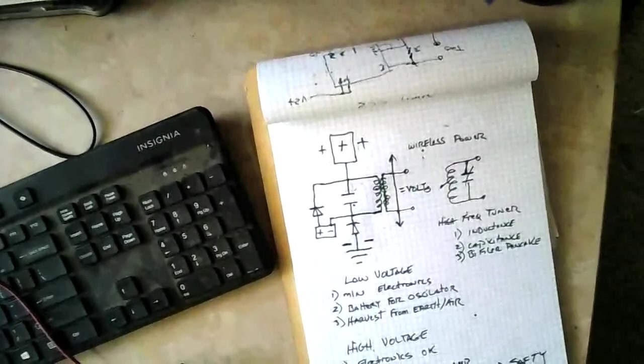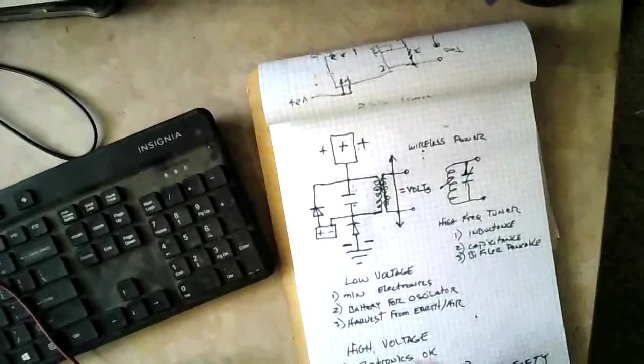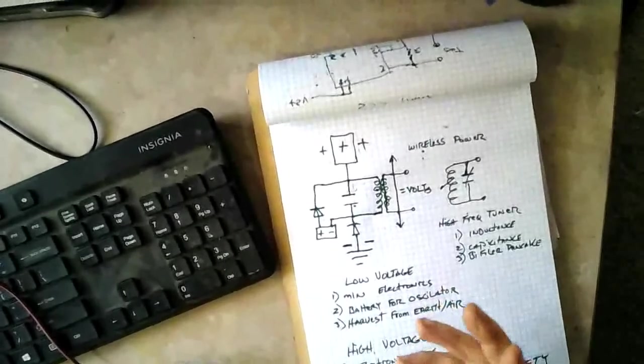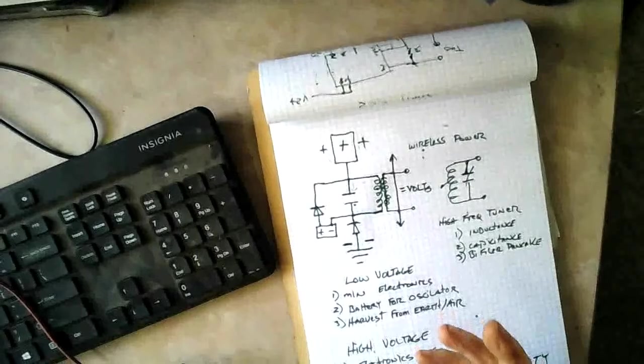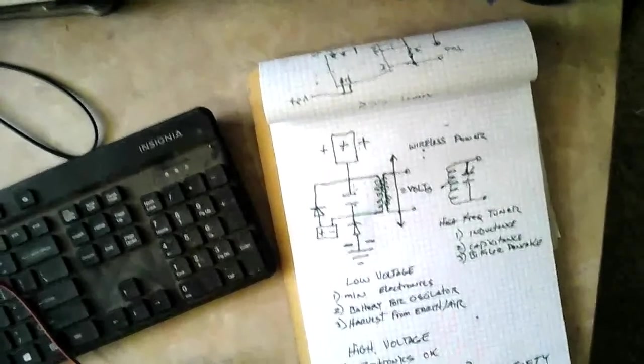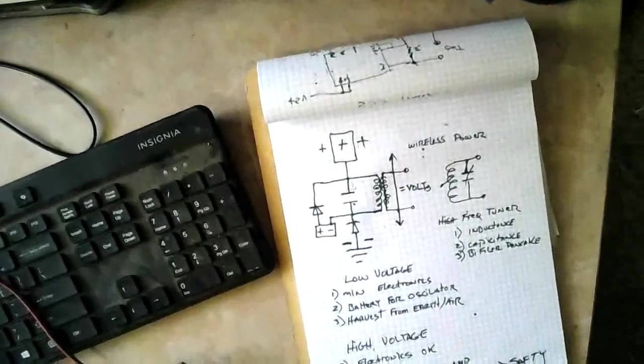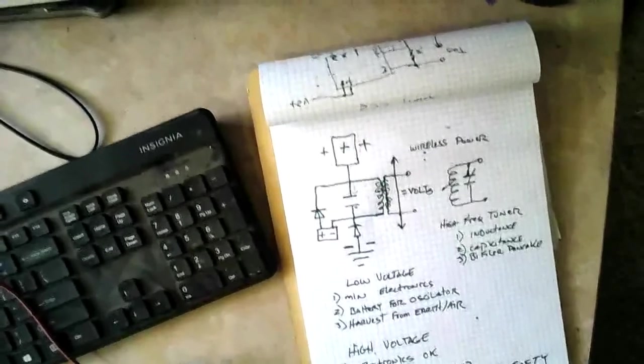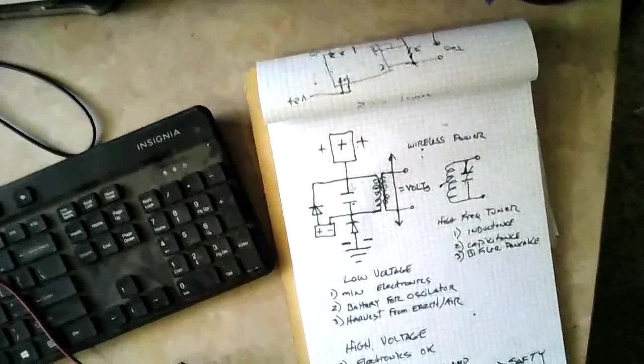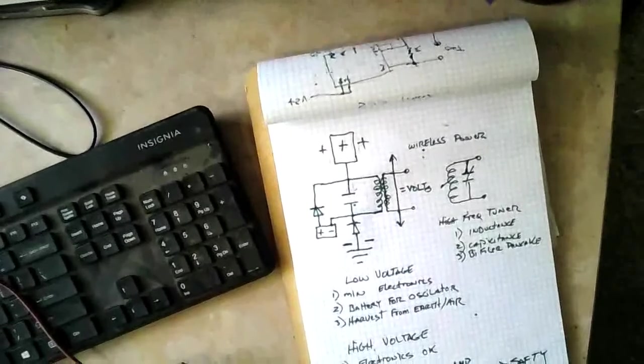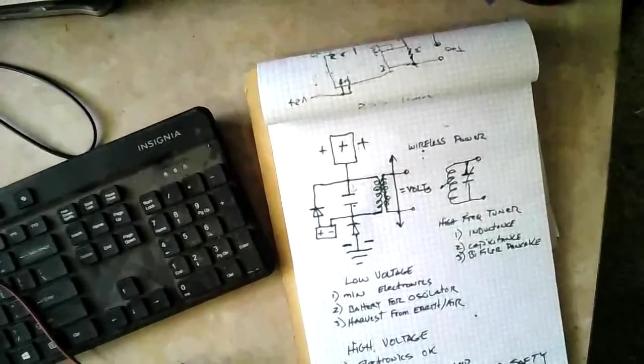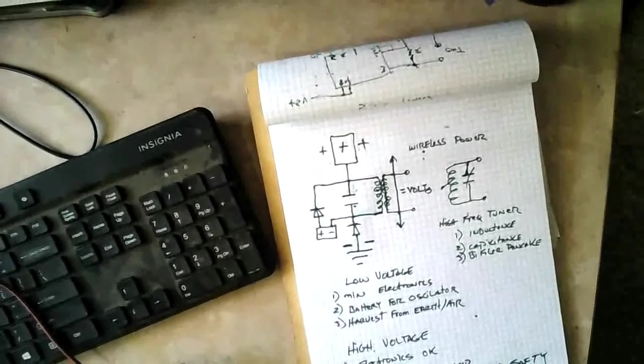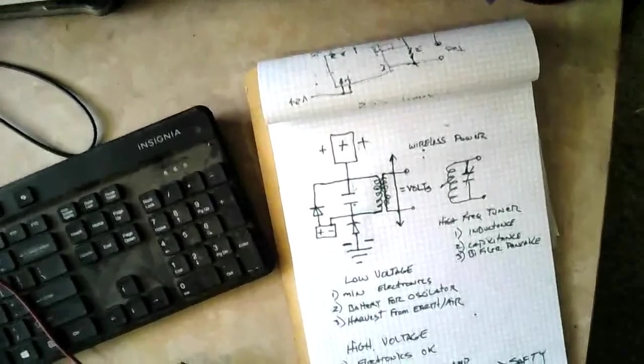Once you've got high frequency and high voltage, then you go through a tuning process where you tune the inductance and the capacitance with a variable capacitor and variable coil. Once you get the frequency tuned in, it's called parallel tuning and series tuning, which is kind of interesting. When you get those things tuned, you can take advantage of the fact that power, measured in watts, is volts times amps.